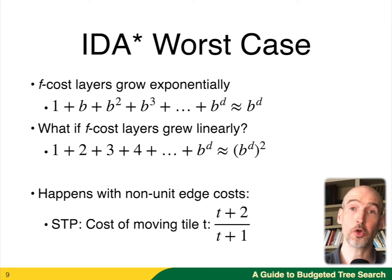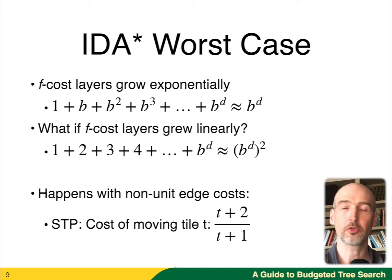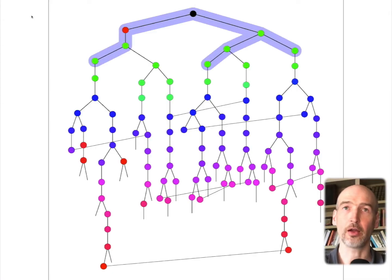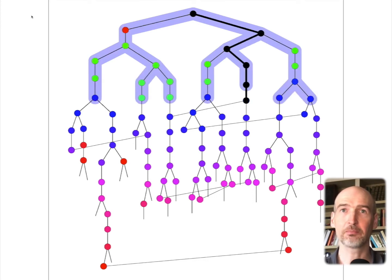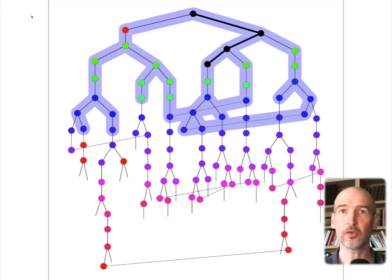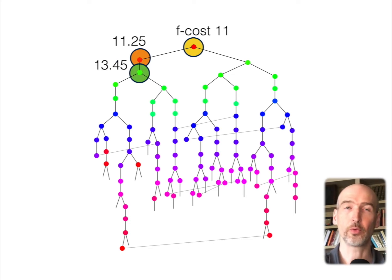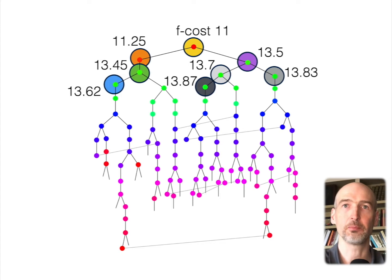This can actually happen when we use edge costs that are just slightly different than the unit edge costs typically used. Here, the cost of moving a tile is determined by the tile itself — tile 1 has cost 1.5, tile 9 has cost 1.1. When we run IDA* with these costs, the tree is actually still growing very slowly because most nodes have unique F costs. The first iteration is one node, the second would be two nodes with F cost 11 and 11.25, then three nodes including 13.45, four nodes with 13.5. In fact, each iteration is just one node larger than the previous — exactly the worst case.